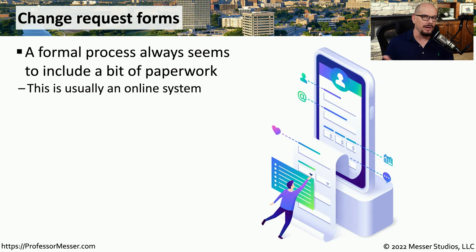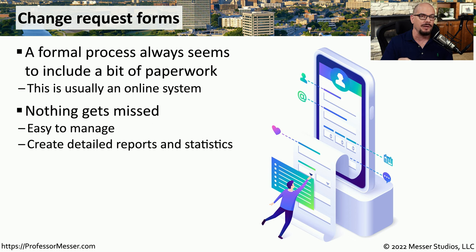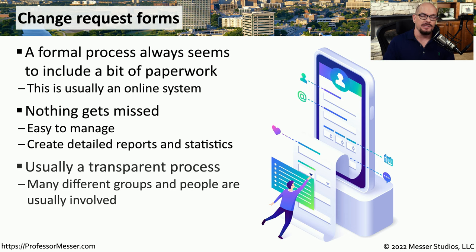This process is very heavy with documentation. The change control request is usually submitted to the board through an online system that allows everything to be documented. This also allows the change control board to see all pending requests and triage which process occurs first, second, third, and so on. This list of proposed changes is typically available for anyone in the organization to view, allowing every part of the organization to understand what changes may be proposed and what changes may be affecting their systems.